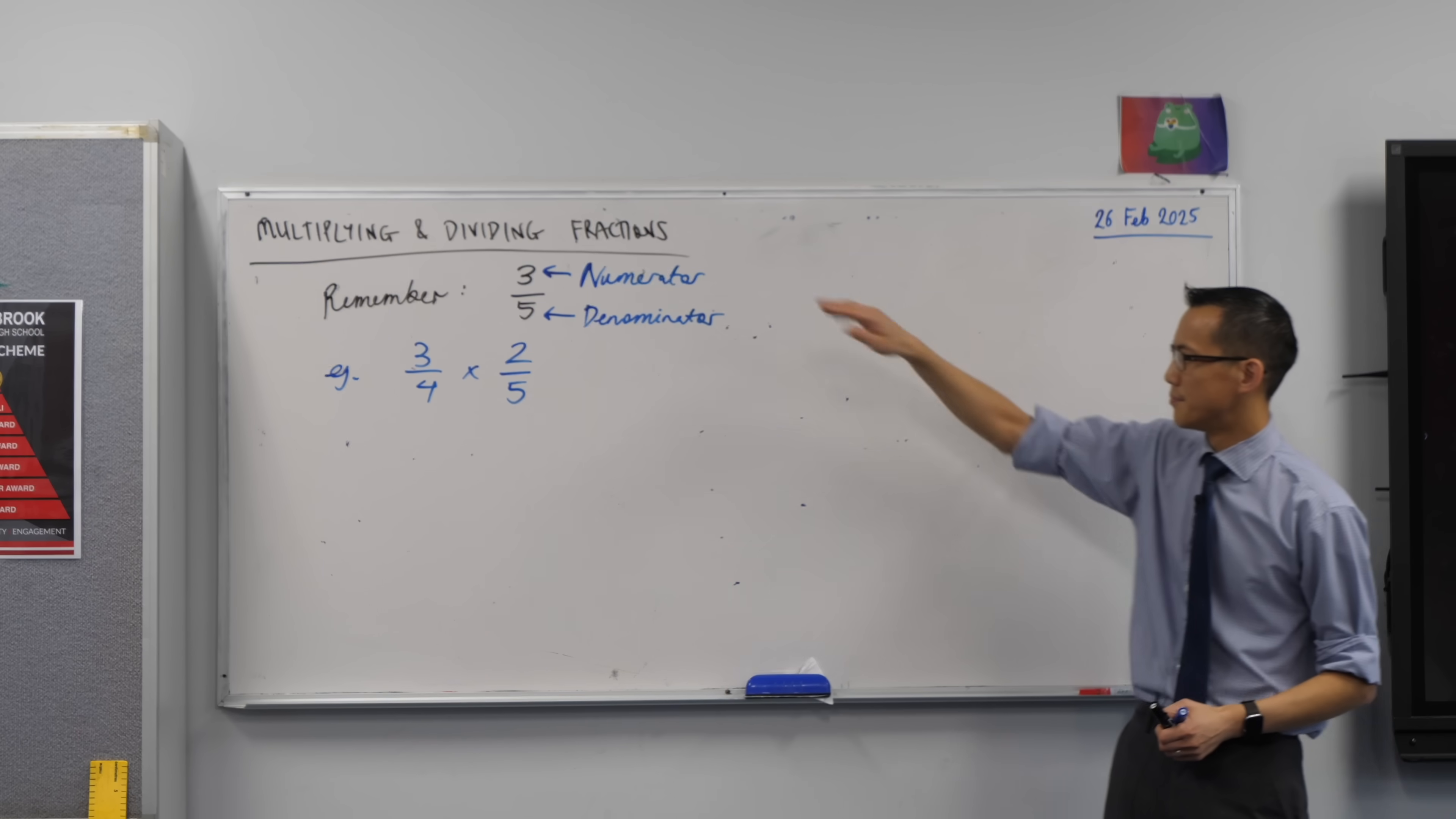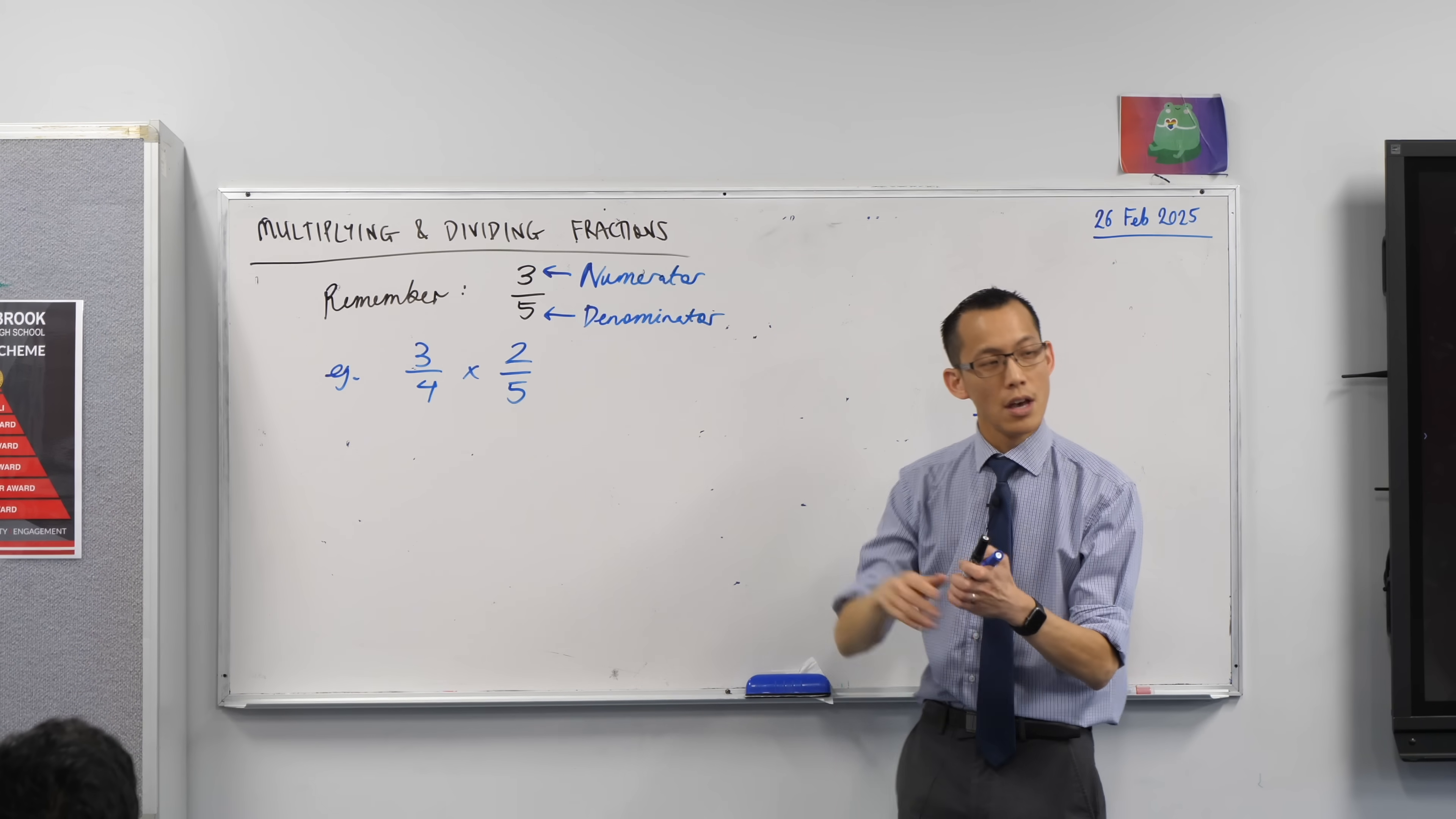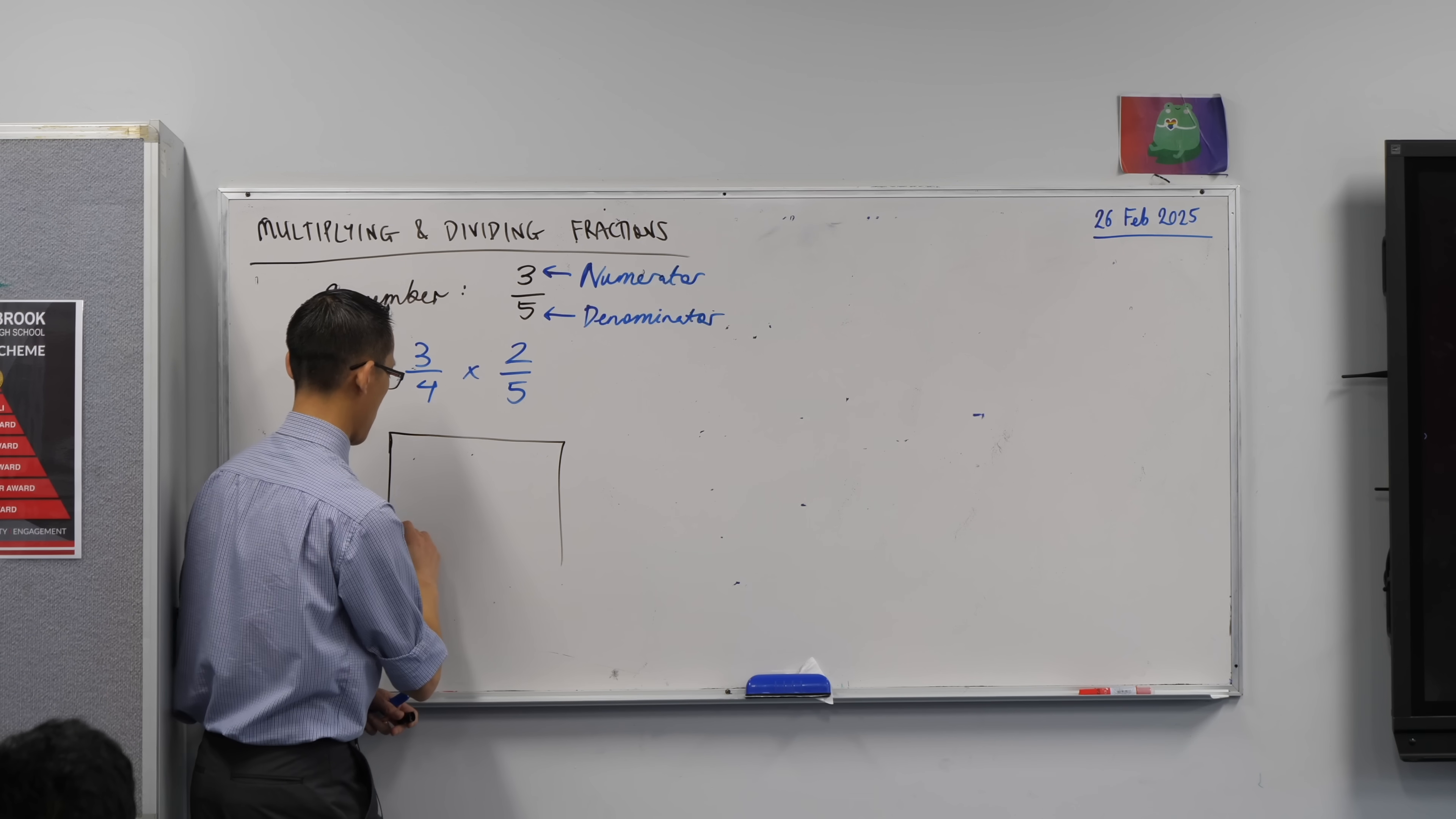When I think about numerators and denominators, to really know what's going on here, I want us to draw a picture. This is what your rulers are for. Okay? So, would you, underneath what we've written, three quarters and two fifths, would you draw for me a pair of rectangles? It's important that the rectangles are the same size.